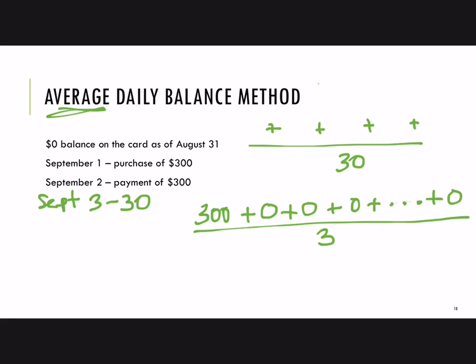We divide by the 30 days in September: $300 divided by 30 is $10. So this person carried an average of $10 per day, and $10 per day for 30 days does add up to $300. So even though the card is paid off by the end of the month, they're going to get charged some interest on this $10 average daily balance amount.